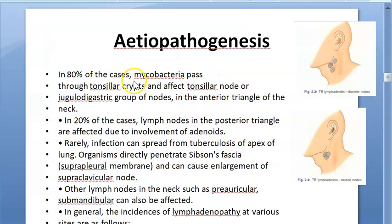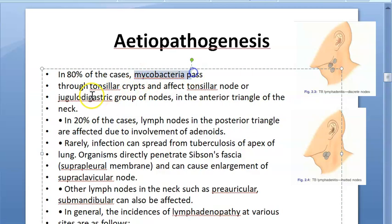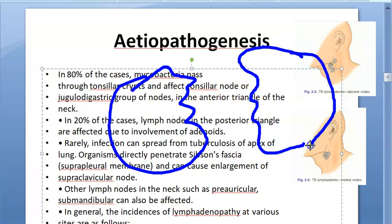Now what exactly is happening? The infection spreads by droplet infection, just like COVID. Somebody will cough or be very close to you, and the mycobacterium will come through your mouth via the tonsillar crypts. It will pass through those crypts and affect the tonsillar node or the jugulodigastric group of nodes, which are located around the internal jugular vein.